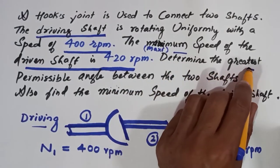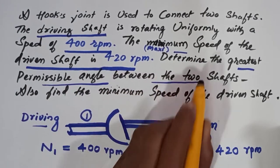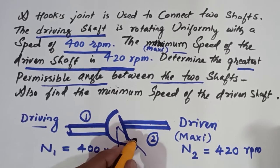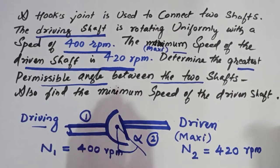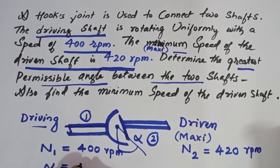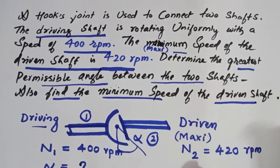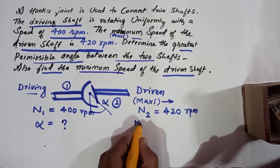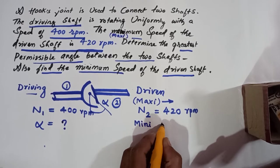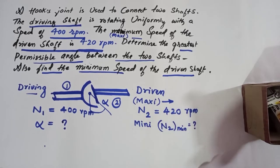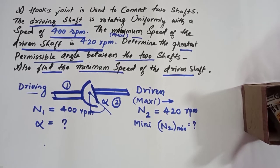Now you need to find the greatest permissible angle between the two shafts. Between these two shafts, what is the maximum permissible angle? Let us call that alpha — alpha is the angle between the two shafts. You also need to find the minimum speed of the driven shaft, which we will call N2 minimum. These are the two things to calculate.